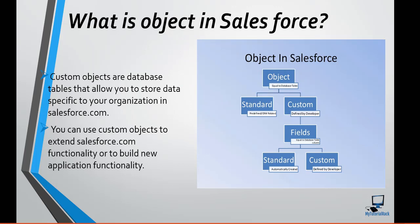Now we have two different types of objects in Salesforce. One is called a standard object and the other is called a custom object. A standard object is a predefined object already given to you when you create a developer's account. When you create a developer account, you get objects like Accounts, Opportunities, Leads, etc. Those are called standard objects because they are already provided by Salesforce.